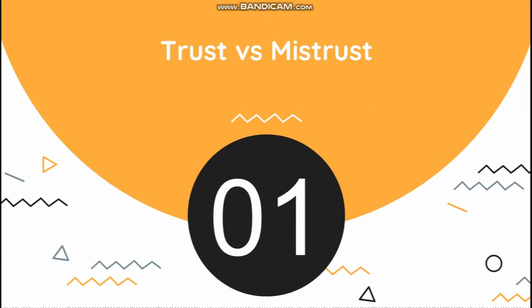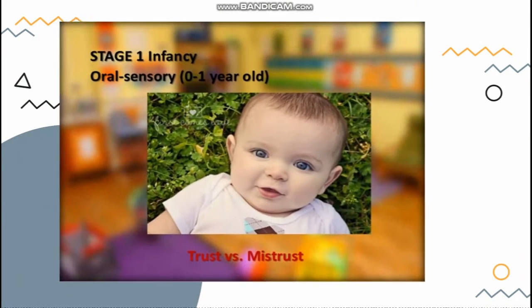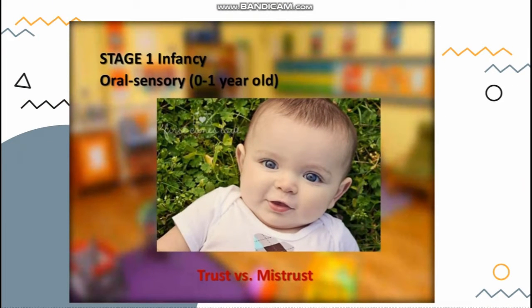The first stage is trust versus mistrust, occurring from birth until one to one and a half years old. During stage one, infancy, because we are completely helpless at this age, we depend on others — the primary caregiver — to care for us and love us. If we receive good care and love, we learn to trust and will generally feel safe and secure in the world. If we don't receive good care and love, we struggle to trust and will feel fearful of an inconsistent world.